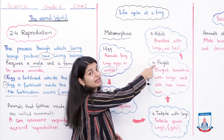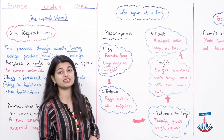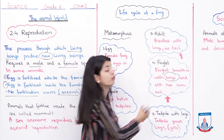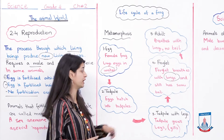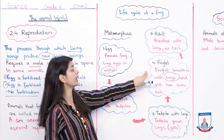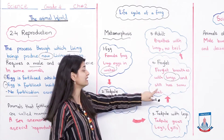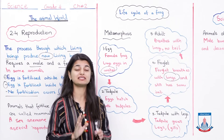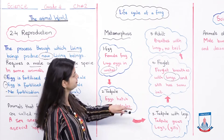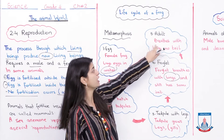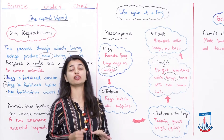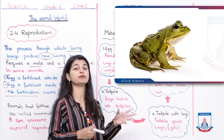The fourth stage is the froglet. The froglet breathes with lungs instead of gills. It still has some tail remaining, but it breathes with lungs now. Finally, when it becomes an adult, it breathes fully with lungs and has no tail. At that point it is a proper adult frog, as you can see in the picture.